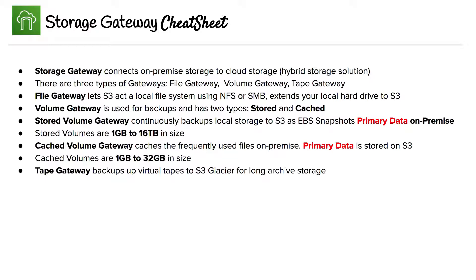Volume gateway is used for backups and has two types: stored and cached. Stored volume gateway continuously backs up local storage to S3 as EBS snapshots, and it's important to remember that the primary data is on-premise. Stored volumes are between one gigabyte to 16 terabytes in size.